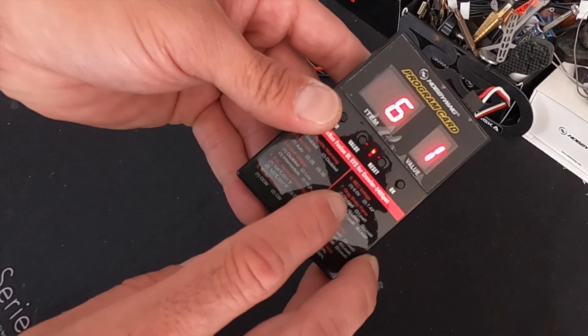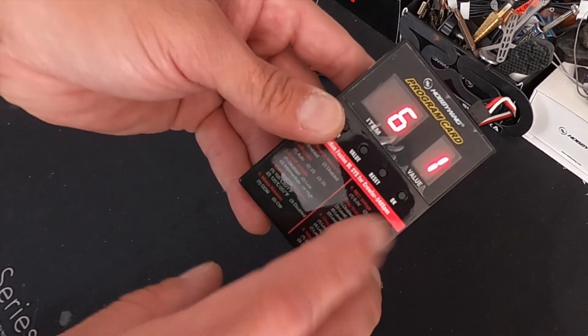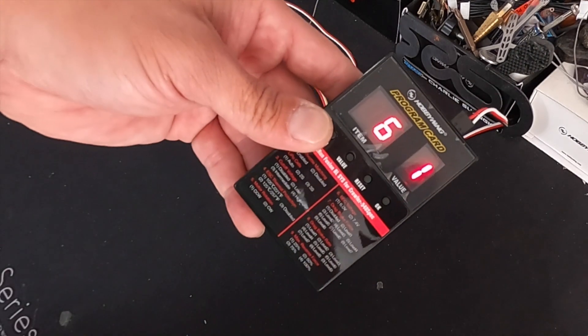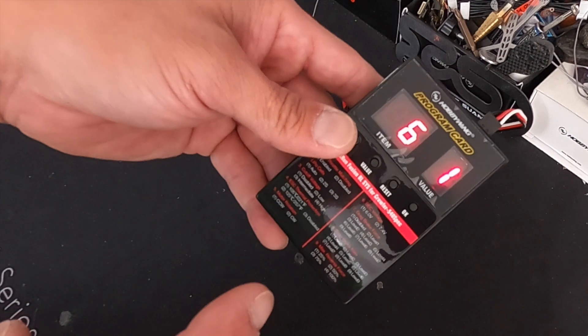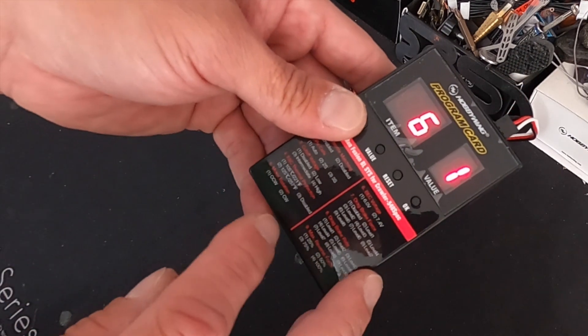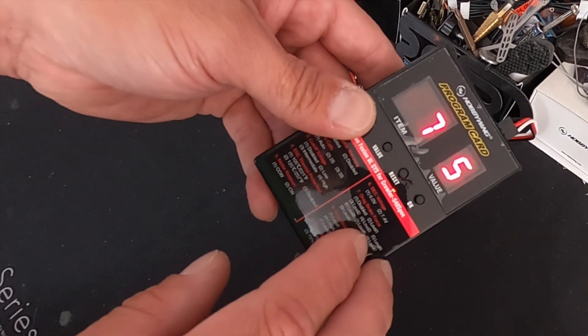Number six is your BEC voltage. You can set the voltage to 6 volts or 7.4. All my stuff I run at 6 volts. Even if I have an HV servo, I run it at 6 volts. The servo runs cooler, stuff like that. It doesn't wear it out as easily.